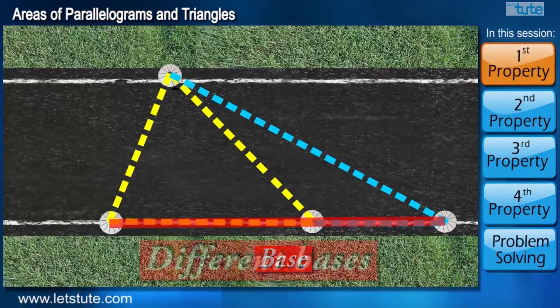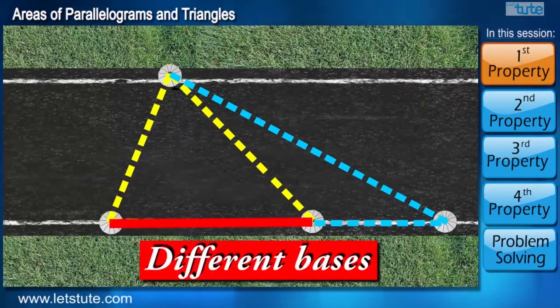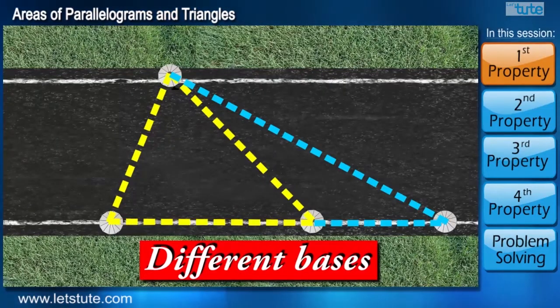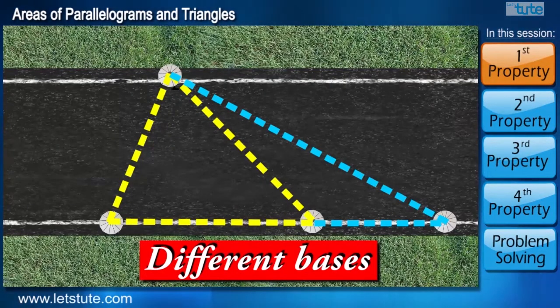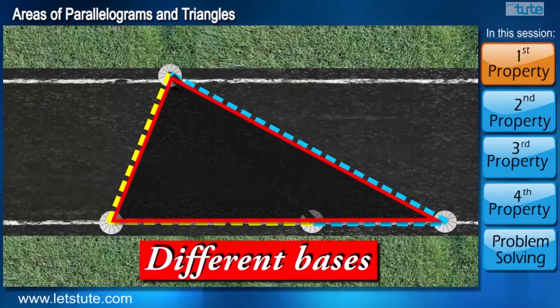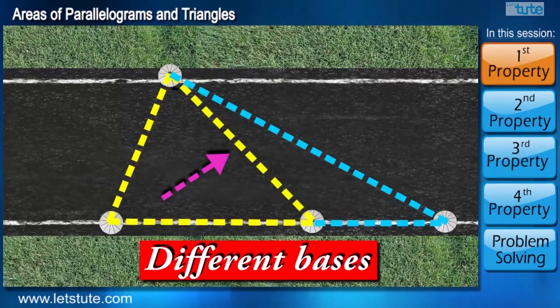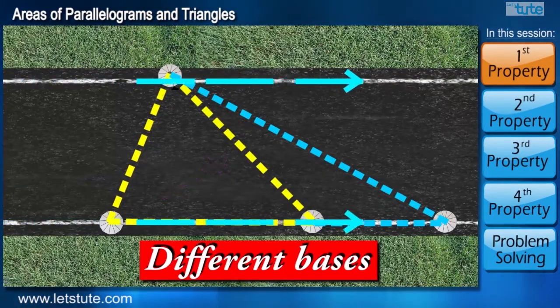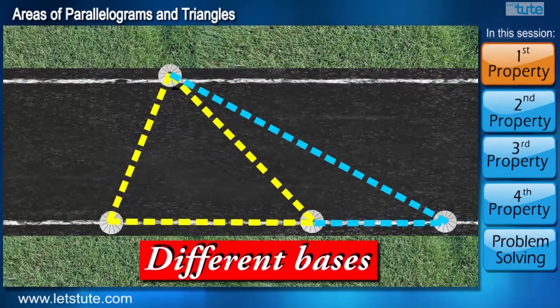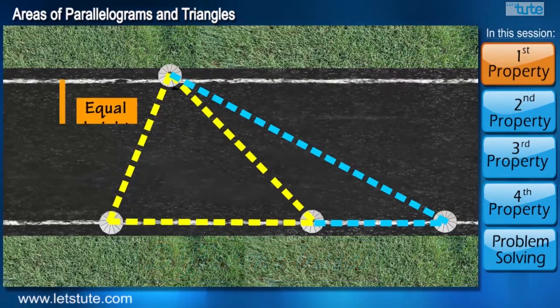Here we can see that the bases are different. If we notice the diagram, we can clearly see that we have split one big triangle into two by joining a line. Even if we didn't have the parallel lines, we can still say that both the triangles have the same height.